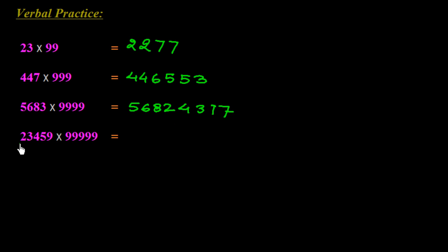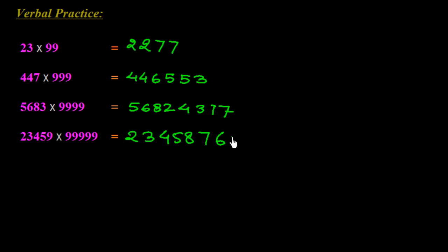Next, multiply 23459 with 99999. One less than 23459 is 23458, which goes on the left side. Subtract 23458 from 99999: we get 7, 6, 5, 4, 1 — so 76541 on the right side. The answer is 2345876541. In this way, we get the solutions to problems involving series of 9s using Vedic Math.